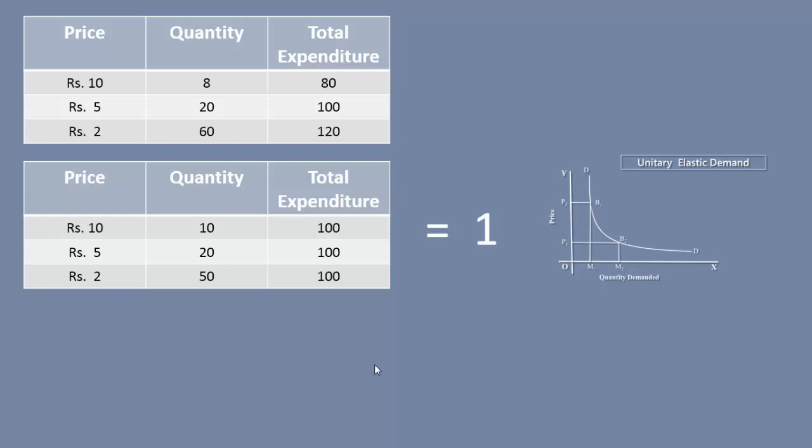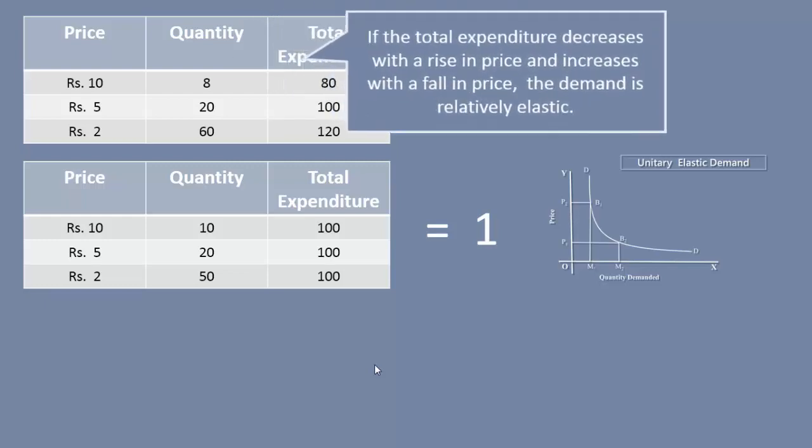According to our observation, the price and total expenditure are moving in the opposite direction. If the total expenditure decreases with a rise in price and increases with a fall in price, the demand is relatively elastic.